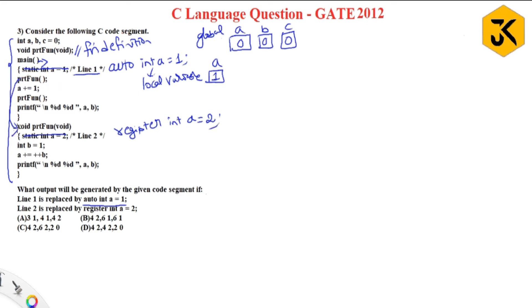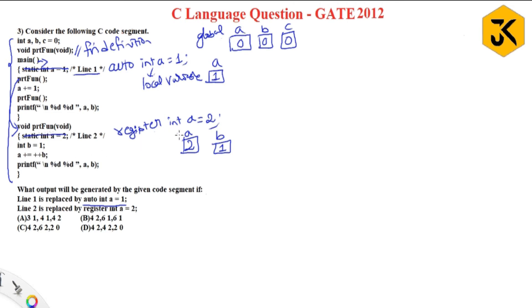Then immediately they call the 'print function', so the cursor moves there. In print function, they have defined a register variable named 'a' assigned a value of 2. Register is a kind of variable which explicitly asks the system to store the value in a CPU register. Then they declare one more variable b = 1. So 'a' and 'b' are local variables with respect to this function, while a, b, c outside are global variables.